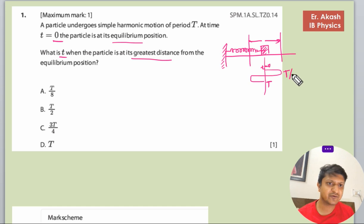So T by 4 plus T by 4 becomes T by 2. This distance is T by 2. And here we will add T by 2 plus T by 4, so it will become 3T by 4.